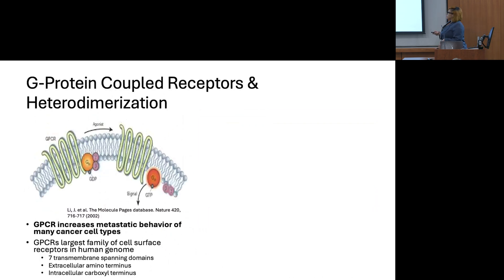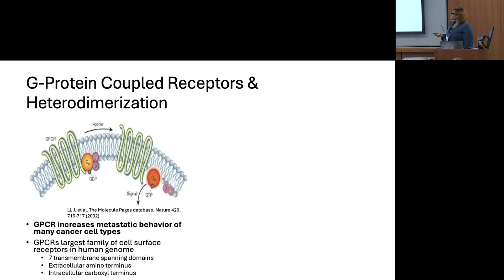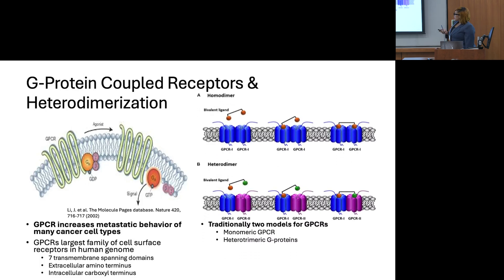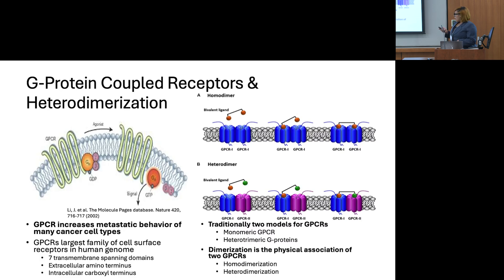GPCRs are one of the largest families of cell surface receptors in the human genome. When a GPCR agonist binds to the receptor, what typically happens is a disassociation of the G protein subunit consisting of G-alpha, beta, and gamma. This disassociation involves an exchange of GDP to GTP, forming a signaling cascade. Coupling happens between GPCRs through two models: a monomeric GPCR and a heterotrimeric G protein, forming physical associations through either homodimerization or heterodimerization.